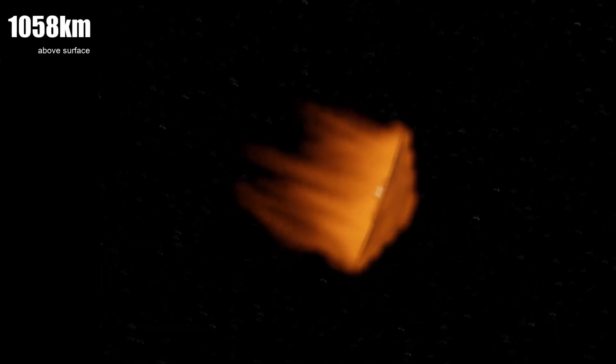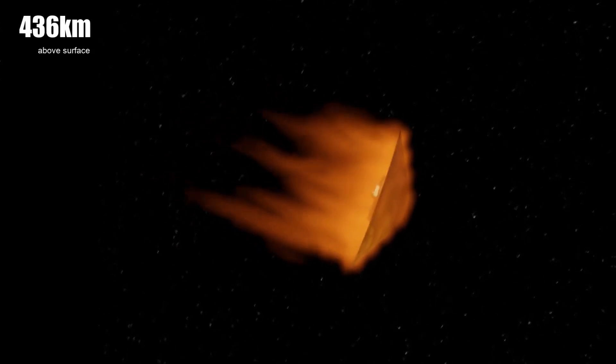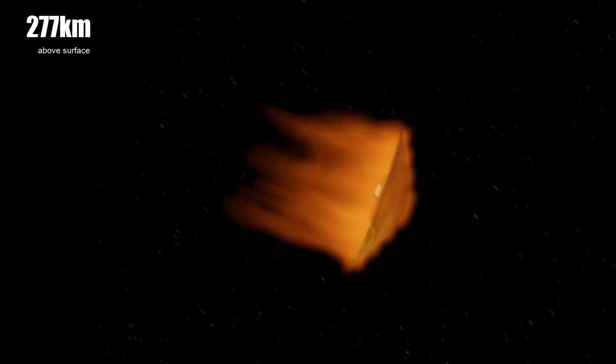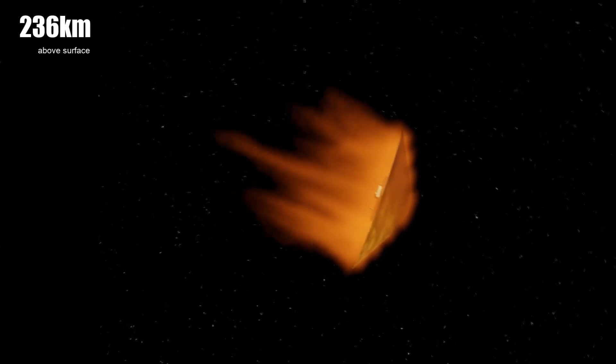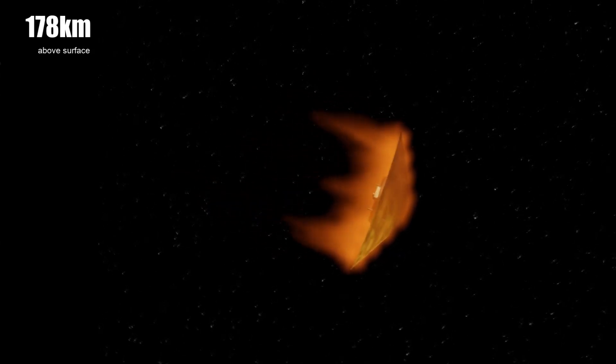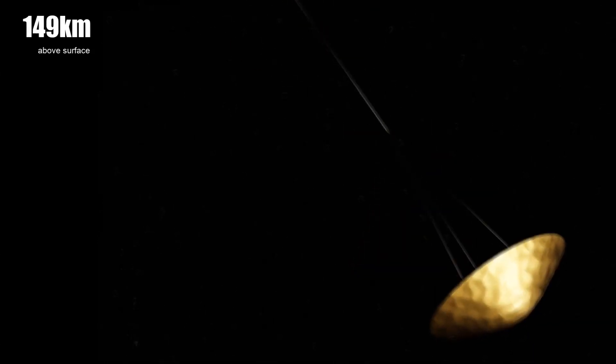Huygens enters Titan's atmosphere at 1,270 kilometers above the surface. By the time it hits an altitude of 300 kilometers, the probe is moving at Mach 20, too fast and hot to conduct useful experiments with the ACP. As the probe's altitude hits 150 kilometers, its speed has dropped to Mach 1.5, slow enough to release a pilot chute.